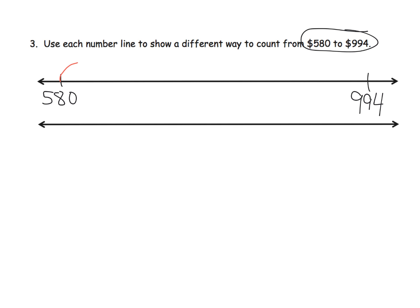For example, let's do it in red. We could go from 580 to 600, so we're going to add 20 here, and that gets us to 600. That's a nice landmark number or benchmark number. So there's our 600. And then if we wanted to, we could go from 600, we could go up 300 to 900. We can add 300 to 900, and that gets us to 900.